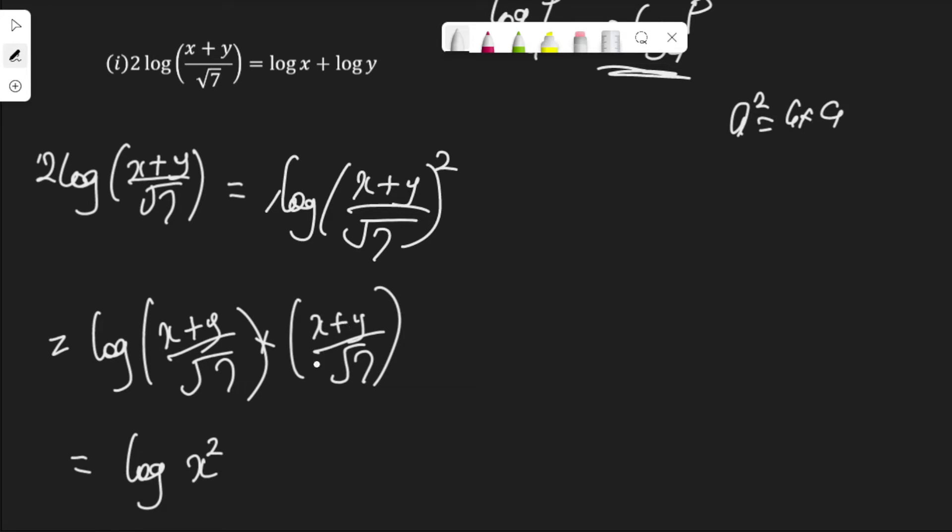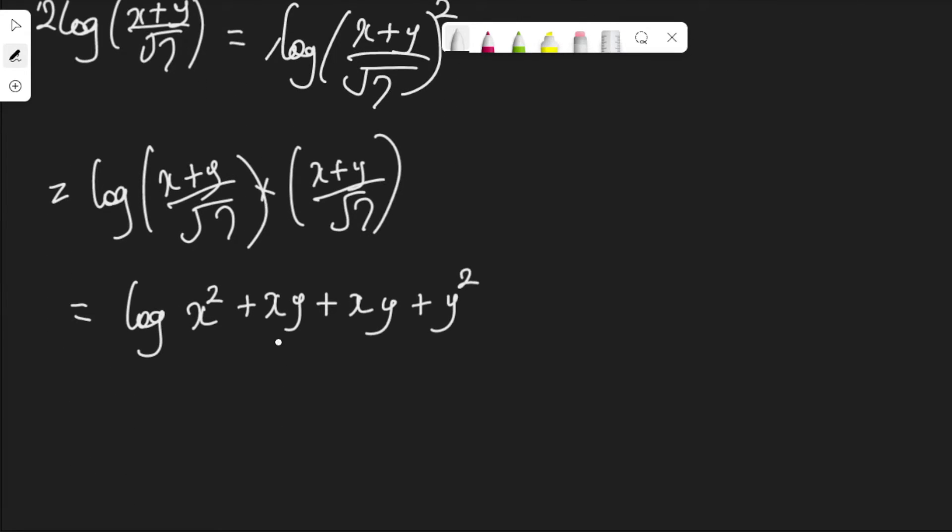x times y is xy, y times x is xy, y times y is y squared. Root 7 times root 7 is 7. The square root should be gone over 7. Now, we have log. Let's bring this x squared and y squared together.